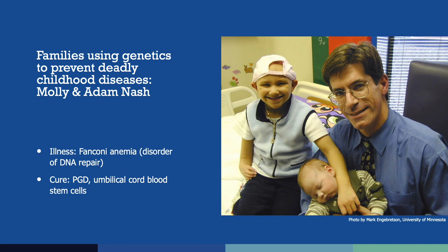Although genetic testing has been used for decades to select certain traits in human embryos, the story of the Nash family brought it into the public eye. Pictured here are siblings Molly and Adam Nash. Molly was born in 1994 with a deadly disorder called Fanconi anemia, a genetic condition that often leads to cancer. As a young child, Molly needed a stem cell transplant to save her life. Her parents decided to use embryo screening with the goal of conceiving a child who would not have Fanconi anemia and would be a perfect donor match for Molly. Using in vitro fertilization (IVF) and pre-implantation genetic diagnosis (PGD), Molly's brother Adam was conceived. When Adam was born in 2000, stem cells from his umbilical cord were donated to his sister. Since the transplant, Molly has recovered and both children are doing well. The Nash family was one of the first in the United States to go public with their use of PGD for donor matching.